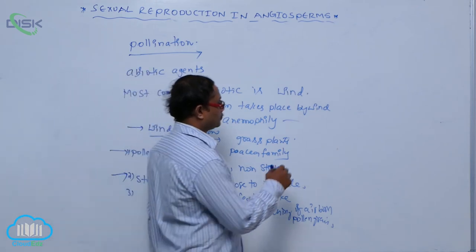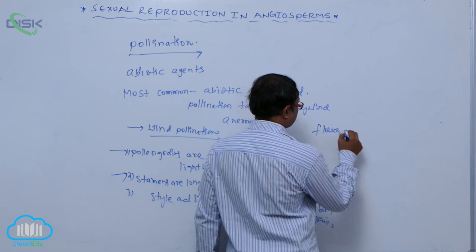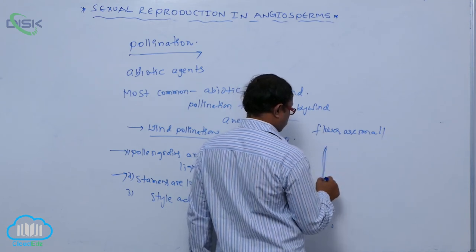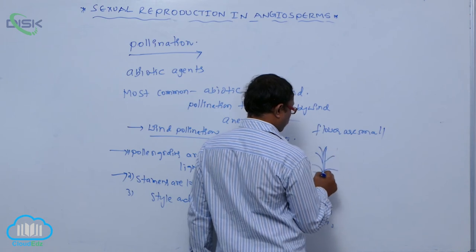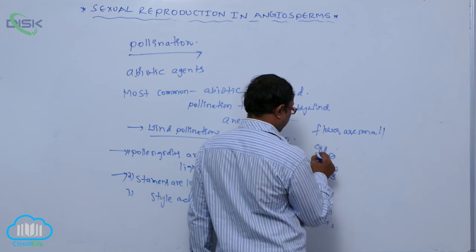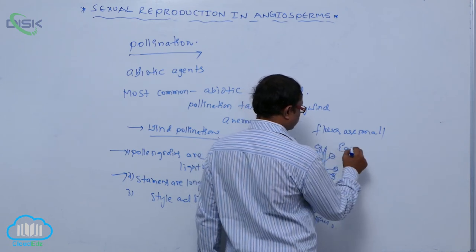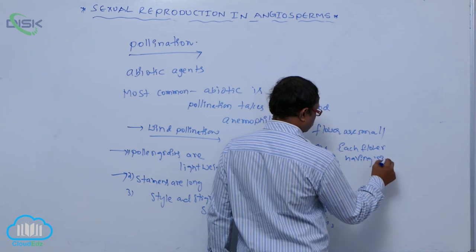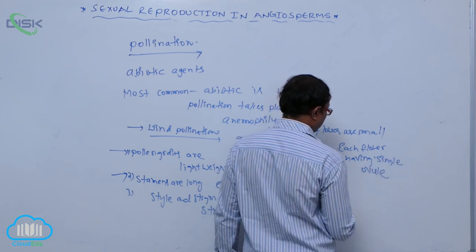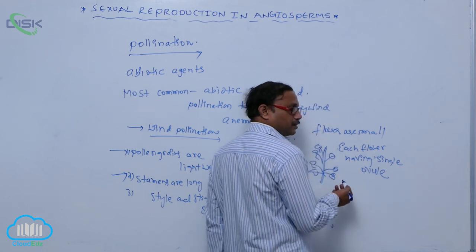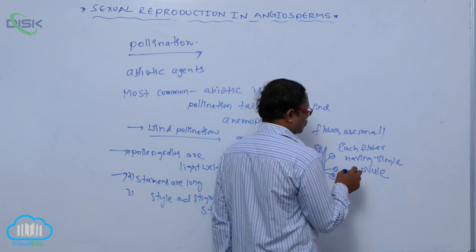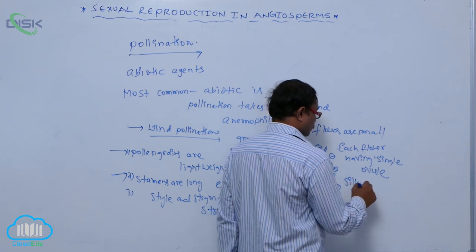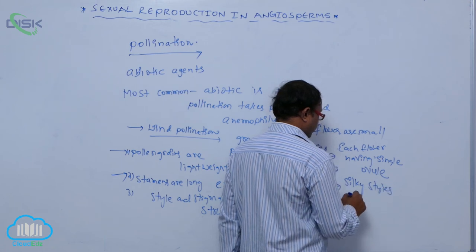When flowers are small, they combine to form an inflorescence. Each flower has only a single ovule for easy adaptation for cross-pollination. The silky styles and stigma help in catching airborne pollen grains.